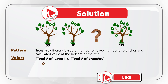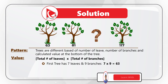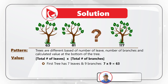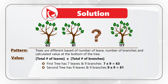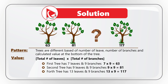For example, the first tree has 7 leaves and 7 branches, and the number at the bottom is 7 × 9 = 63. The second tree has 9 leaves and 9 branches, and 9 × 9 = 81. The third tree is missing, but the fourth tree has 13 leaves and 9 branches, and 13 × 9 = 117.